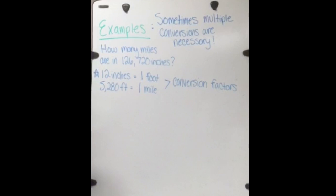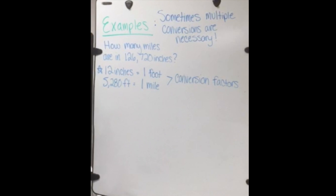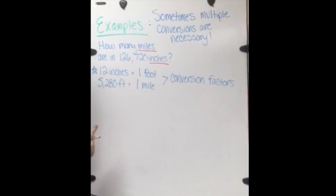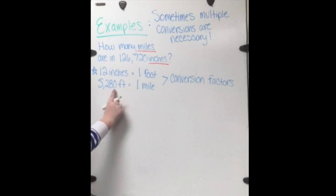Sometimes multiple conversions are necessary. For this question, how many miles are in 126,720 inches? So we're converting from inches to miles. The two conversion factors you need for this is 12 inches equals 1 foot and 5,280 feet equals 1 mile.